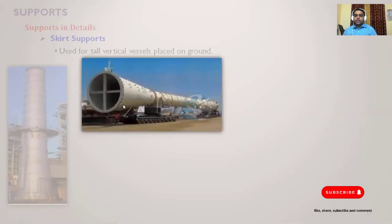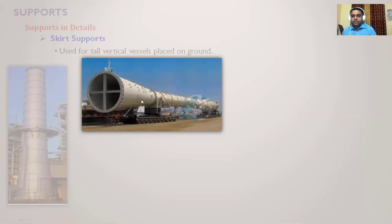This is also a very tall column shown in transit or transportation. These huge vessels will have a skirt support — you can see the skirt support height itself is around 10 meters, and after that the equipment has 30 to 40 meters of height. For such a large L/D ratio, skirt type supports are provided.